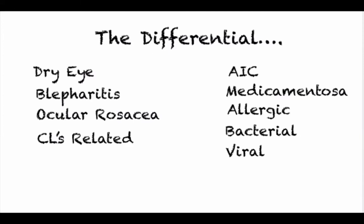Ocular rosacea is another chronic condition that's bilateral but may be asymmetric in its presentation as well. Contact lens-related red eyes usually have an acute onset and are usually associated with some level of contact lens abuse. Adult ocular conjunctivitis will often initially be treated as a standard bacterial conjunctivitis. It will oftentimes resolve with topical antibiotic therapy, but then will likely return because this condition usually stems from a systemic chlamydial infection, requiring either oral doxycycline or azithromycin to resolve.